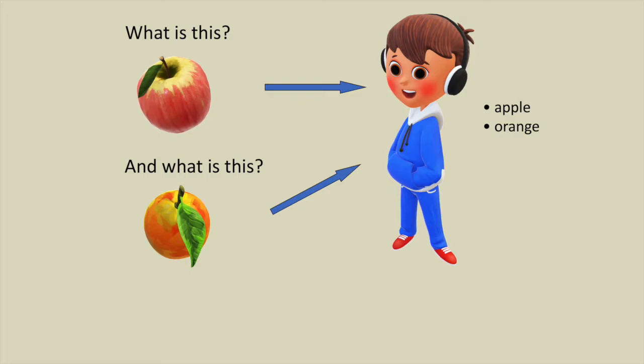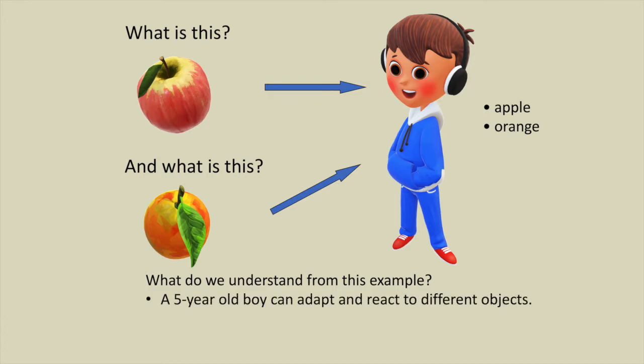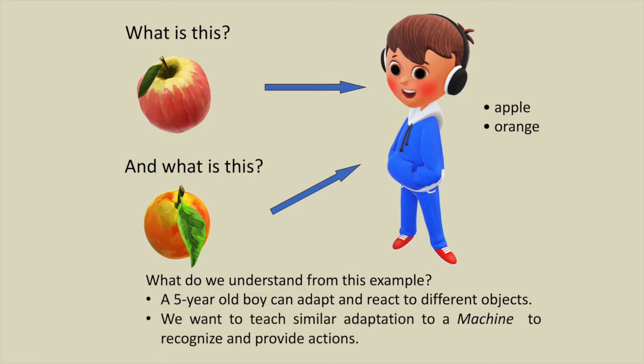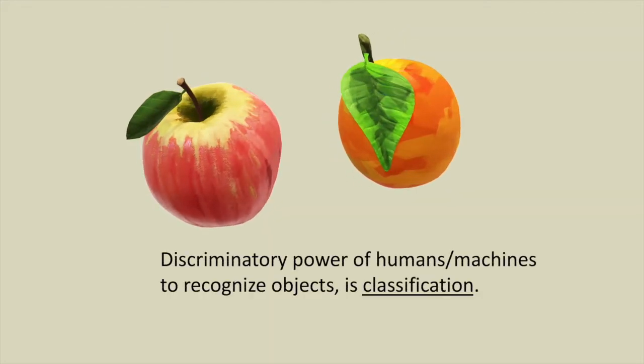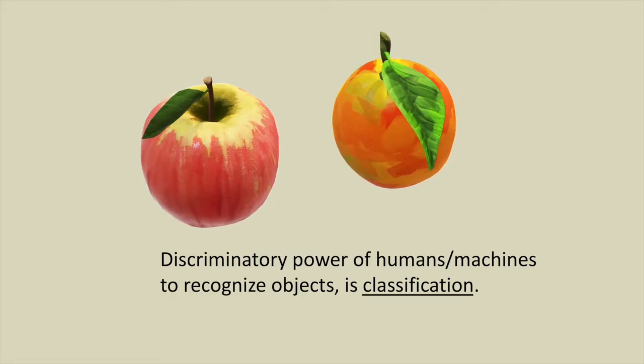So what do we understand from this example? Basically a five-year-old boy can adapt and react to different objects. We want to teach similar adaptation to a machine to recognize and provide actions. So we can say that discriminatory power of humans or machines to recognize objects is classification.